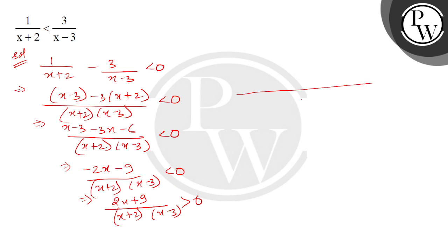If we take critical points on the number line, how much do you have? 3 and this is your minus 2 and minus 9 by 2. Minus 9 by 2 means minus 4.5, which will be here.